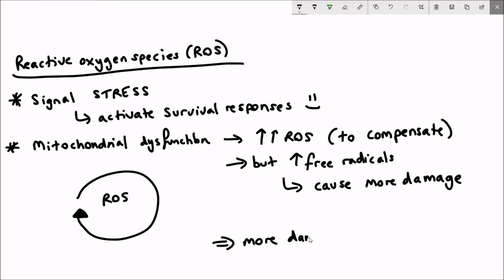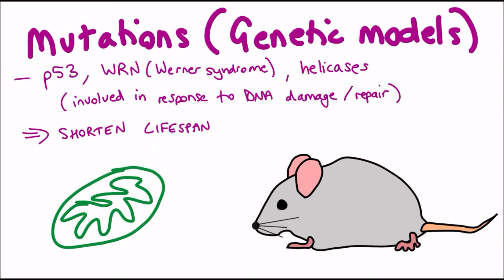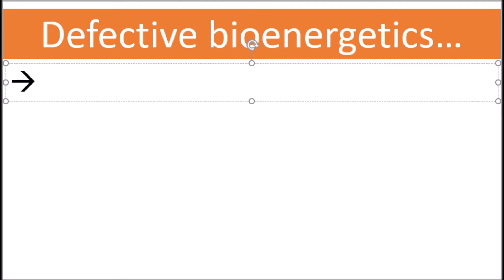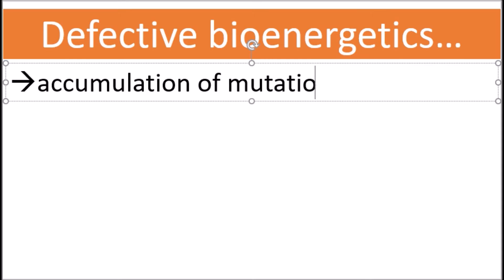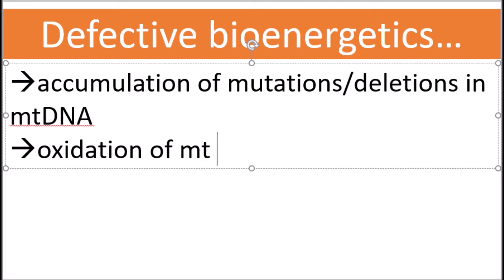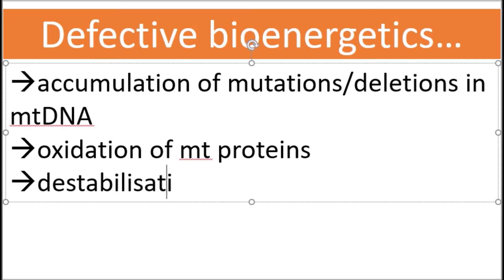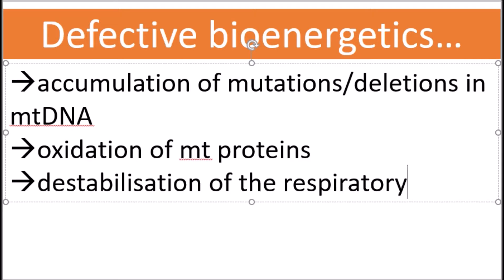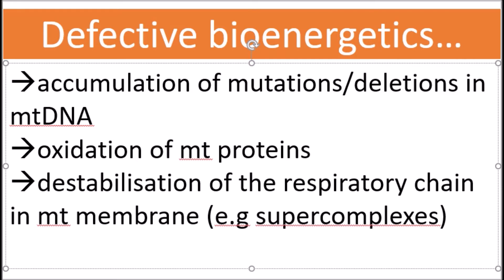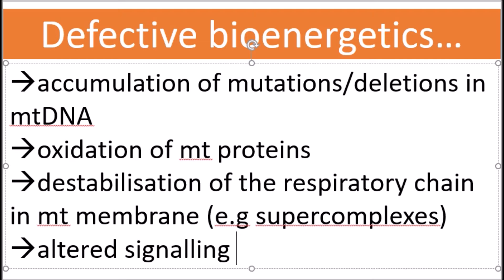There is evidence that increased reactive oxygen species may actually prolong lifespan in yeast and worms, so the situation is complex. Regarding mitochondrial DNA mutations, a mutated DNA polymerase resulting in increased mutation accumulation reduced lifespan in mice. Defective bioenergetics can also occur over time due to oxidation of mitochondrial proteins and destabilization of the respiratory chain, which increases ROS production. These three categories highly overlap, but mitochondrial dysregulation does seem to be involved in the aging process.